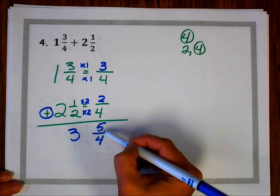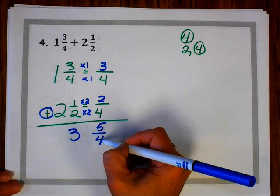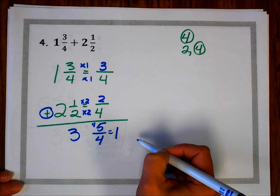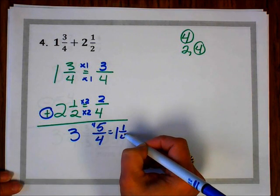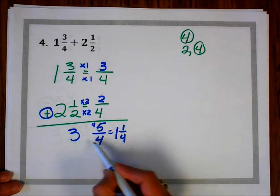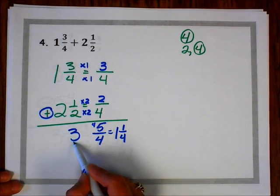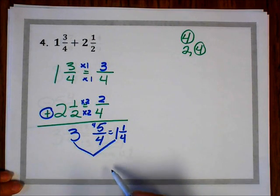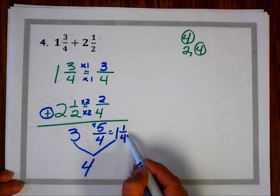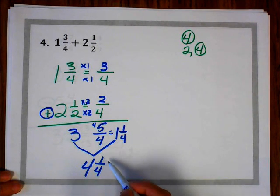I have an improper fraction, so I need to change it into a mixed number. 4 divides into 5 one time. 1 times 4 is 4, so I have 1 left over. My denominator stays the same. So now I have 3 wholes here, and I have another whole here that I need to combine with my other wholes. So 3 wholes plus 1 whole is 4 wholes. I bring my 1 fourth down. 1 fourth is in simplest form because my numerator is 1.